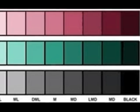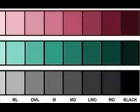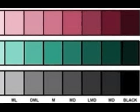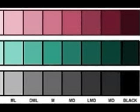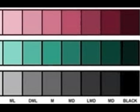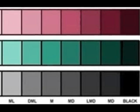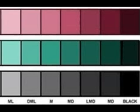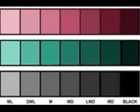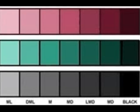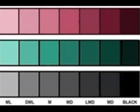Here we have three colors: burgundy, green, and black. When you view these value scales, you can see the changes the colors make when adding either white or black paint.